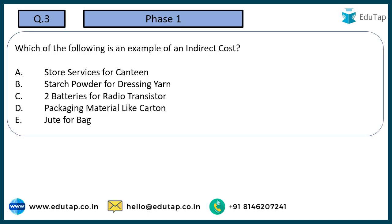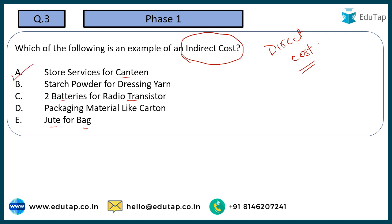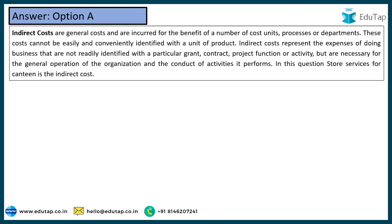Coming to the next one: which of the following is an example of an indirect cost? Direct cost means material that can be directly related to the finished product — for example, 2 batteries for a radio transistor, packaging material like carton or jute bag, and starch powder for dressing yarn. All of these can be directly attributed to the final product. But store services for the canteen — you may not be able to directly relate that to your final product, so that is an indirect cost. Option number A — canteen — would be the correct answer.